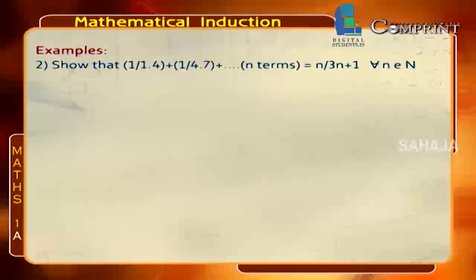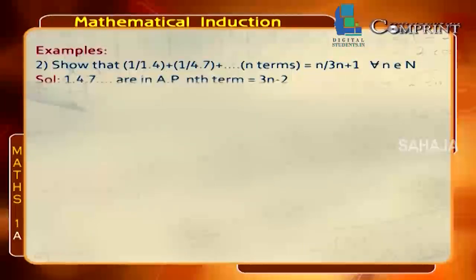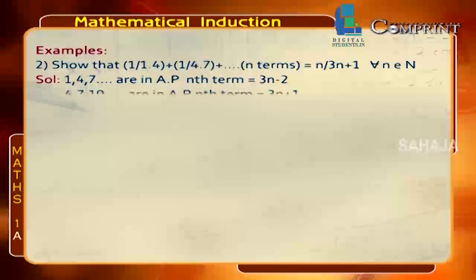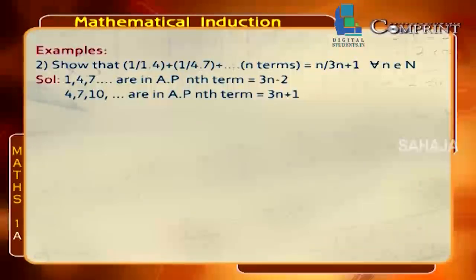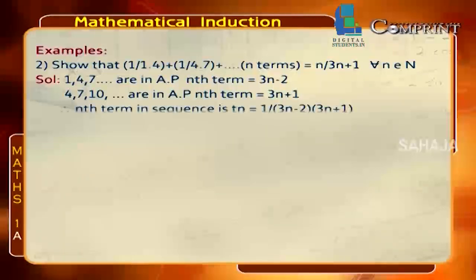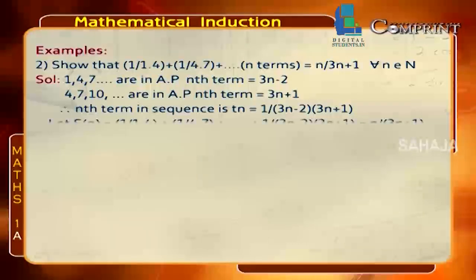Example 2: Show that 1/(1×4) + 1/(4×7) + 1/(7×10) + … up to n terms equals n/(3n+1) for all n belonging to the natural numbers. The first terms 1, 4, 7, … form an AP with a = 1, d = 3, giving nth term = 3n−2. The second terms 4, 7, 10, … give nth term = 3n+1. So the general term Tn = 1/[(3n−2)(3n+1)].